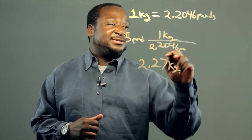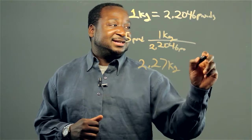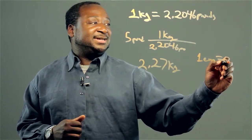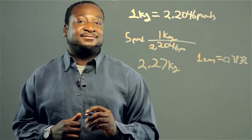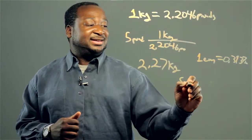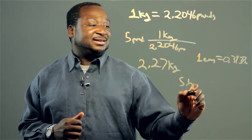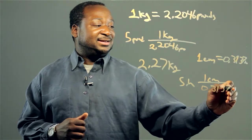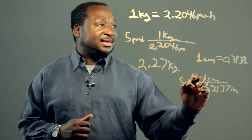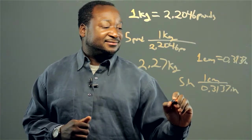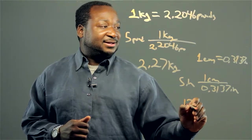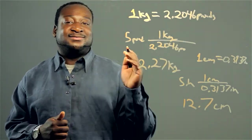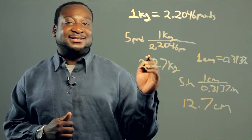And now, when converting from centimeters to inches and inches to centimeters, we use our key. 1 centimeter is equivalent to 0.3937 inches. So let's say we have 5 inches and we want to convert that. 1 centimeter is equivalent to 0.3137 inches. And when we do the math, we get 12.7 centimeters. And that's how you convert from pounds and inches into metrics.